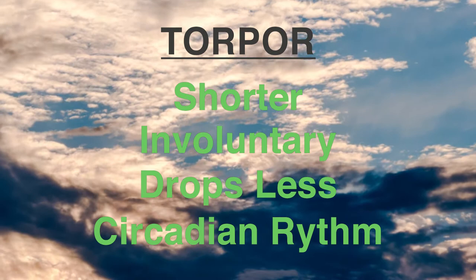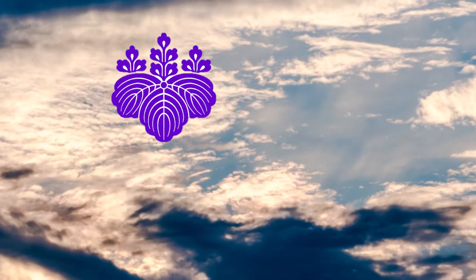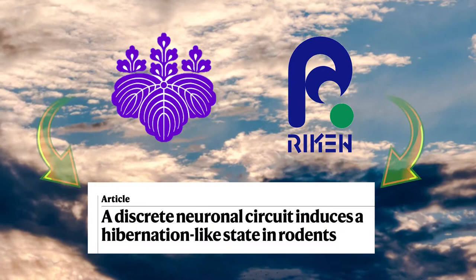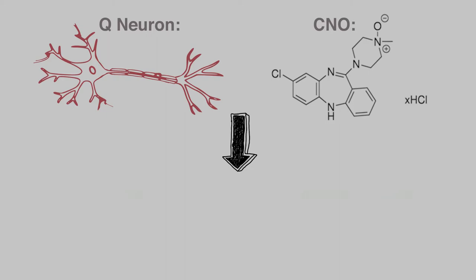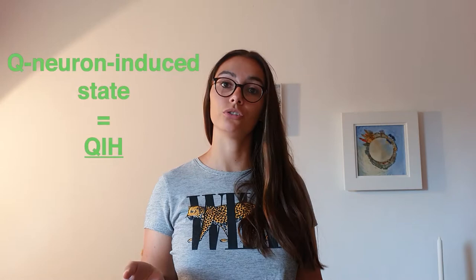Researchers from the University of Tsukuba and the Riken Center for Biosystem Dynamics Research showed that you can induce hibernation in mice. They identified a population of neurons in the hypothalamus that expressed a neuropeptide called QRFP. QRFP has been implicated in hypometabolism before and is explored further in this paper. These neurons were called Q-neurons, and excitation of these Q-neurons by a drug called clozapine N-oxide led to hypothermia and hypometabolism. The researchers called this Q-neuron induced state QIH.